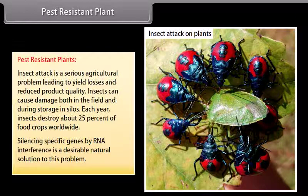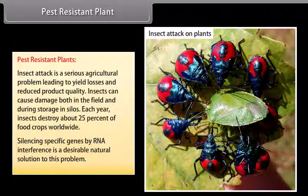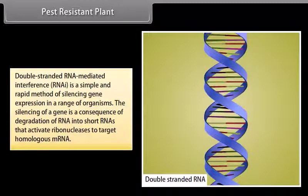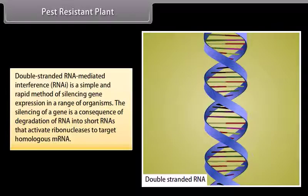Silencing specific genes by RNA interference is a desirable natural solution to this problem. Double-stranded RNA-mediated interference, RNAi, is a simple and rapid method of silencing gene expression in a range of organisms. The silencing of a gene is a consequence of degradation of RNA into short RNAs that activate ribonucleases to target homologous mRNA.